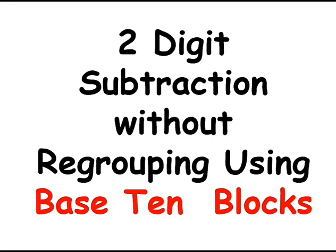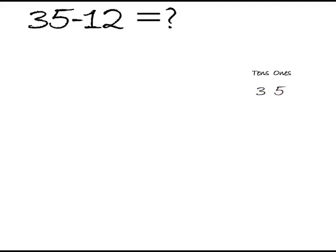Let's start with an example: what is equal to 35 minus 12? We will write this into a conventional form, means vertical form. Tens, ones. 3 tens, 5 ones, minus 1 tens, 2 ones.